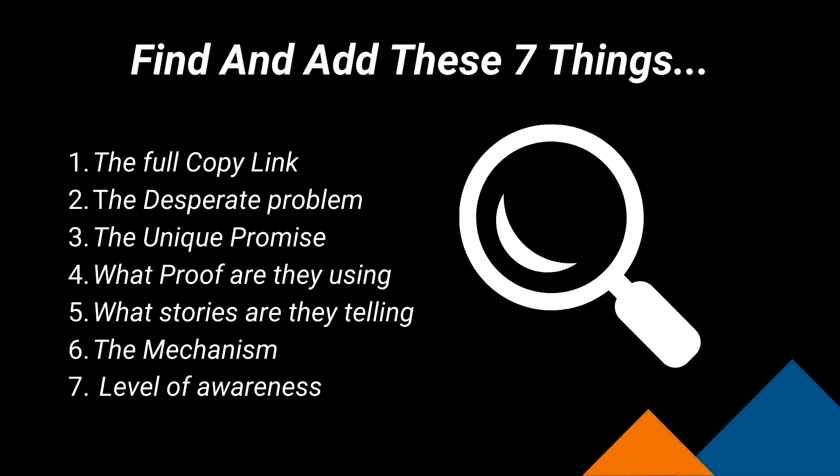For this example, I'm going to mainly focus on the competitor's perspective, where you get a document or an Excel spreadsheet and add each of these things: one, the full copy link of where you sourced the information; then add the desperate problems they're calling out; then the unique promise; what proof are they using; what story are they telling; what mechanisms are they using to solve the problem; and what level of awareness are they angling their copy. Then go through the copy, the emails, the ads, and start pinpointing things you notice with any of these seven points.